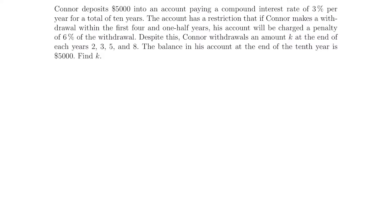Conor deposits $5,000 into an account paying a compound interest rate of 3% per year for a total of 10 years. The account has a restriction: if Conor makes a withdrawal within the first four and a half years, his account will be charged a penalty of 6% of the withdrawal. Despite this, Conor withdraws an amount K at the end of each of years 2, 3, 5, and 8. The balance in his account at the end of the 10th year is $5,000. Find K.